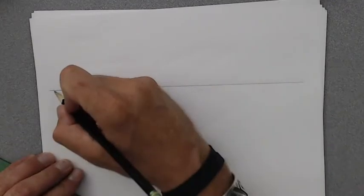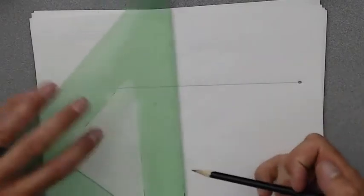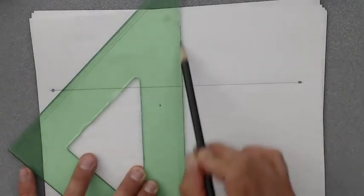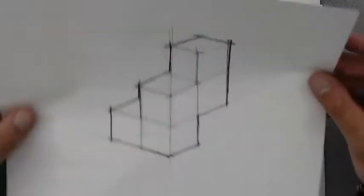And then I get my two vanishing points, and again keep in mind as I draw I'm going to draw a little darker so it shows up better for the camera. So the next thing I'm going to do is draw what we call my true height line, that's right in the center. So I'm going to create the foundations of starting that perspective.